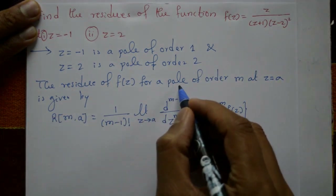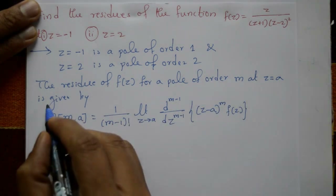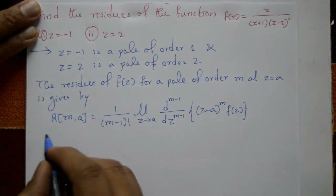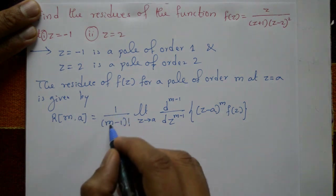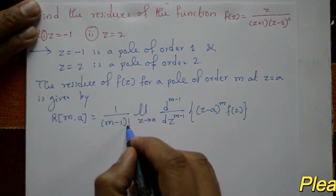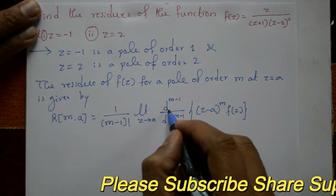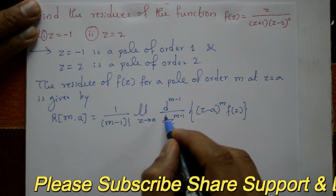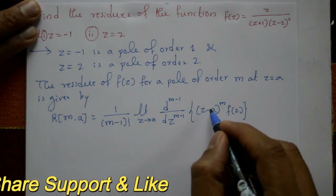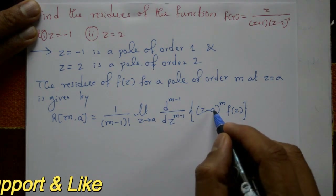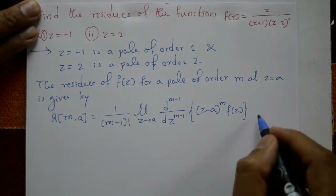The residue of f(z) for a pole of order m at z = a is given by: R(m, a) = [1 / (m-1)!] × limit as z tends to a of d^(m-1)/dz^(m-1) [(z - a)^m × f(z)]. This is the general formula.